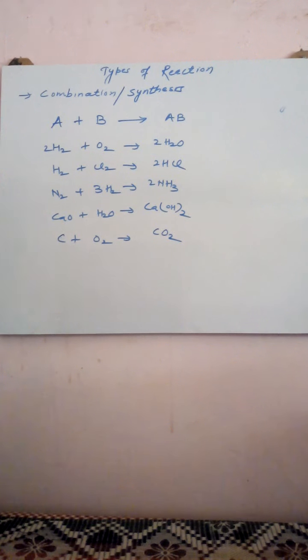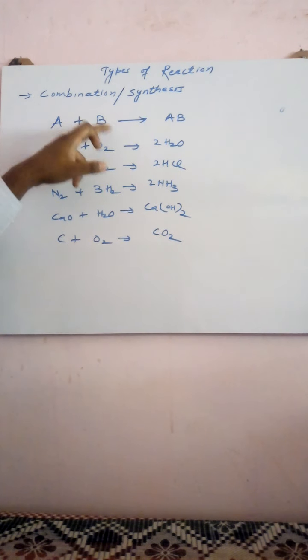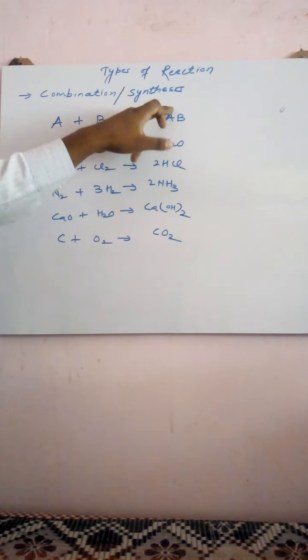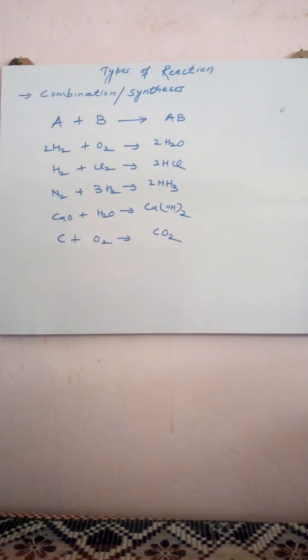You can see here, S₂ acts as A, O₂ acts as B — they combine together, and AB means S₂O. Similarly, all other examples follow the same pattern of two substances combining to form one product.